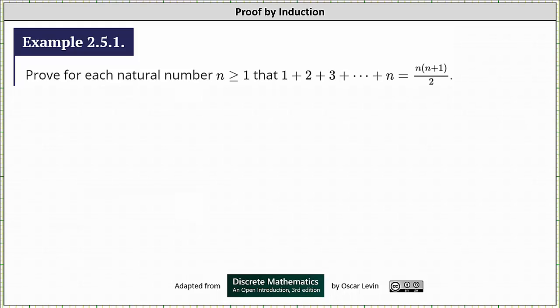We want to use the method of proof by induction to prove for all natural numbers n ≥ 1, 1 + 2 + 3 + ... + n equals n(n+1)/2.